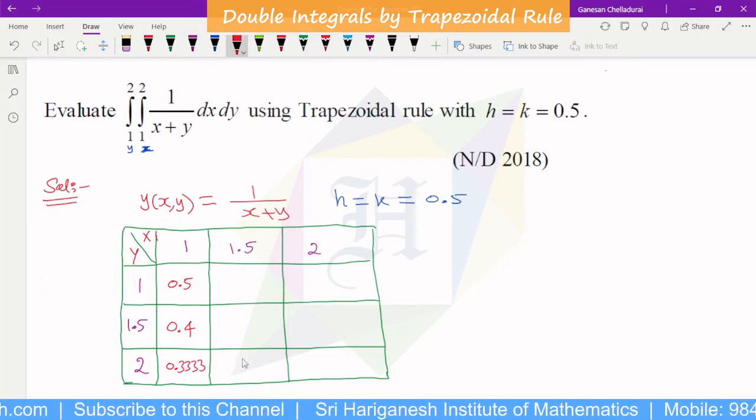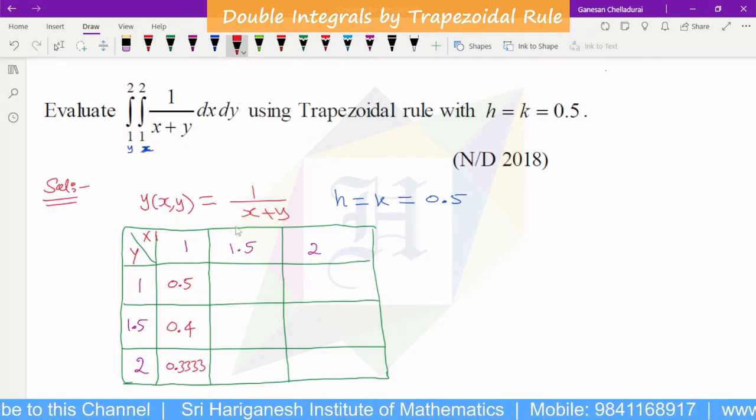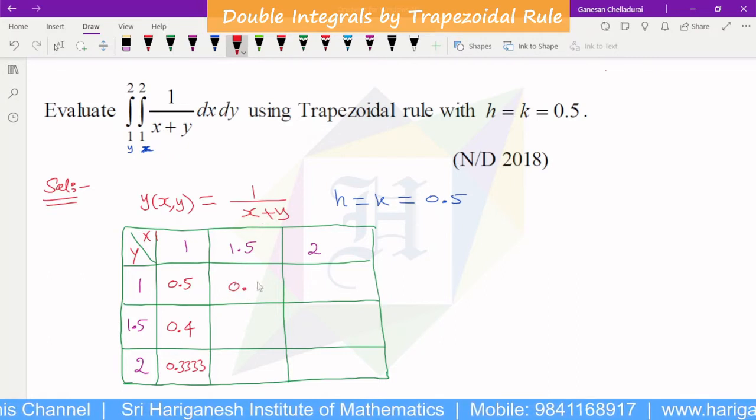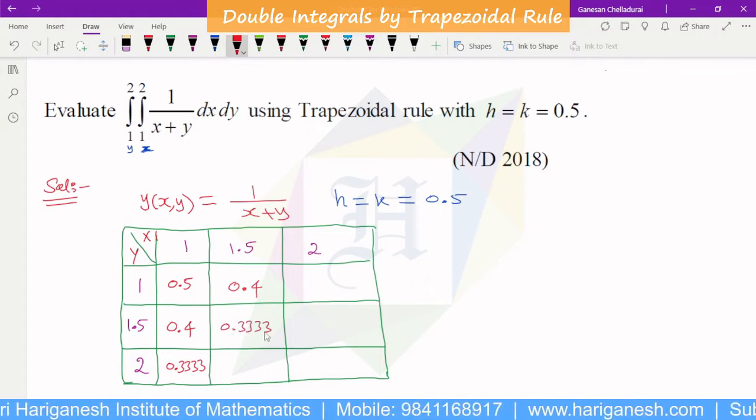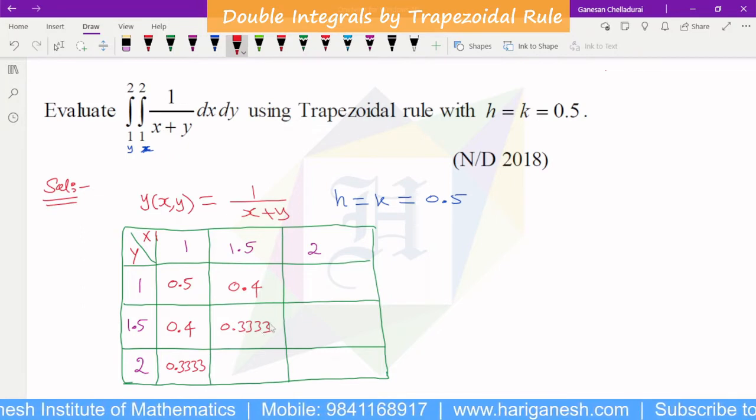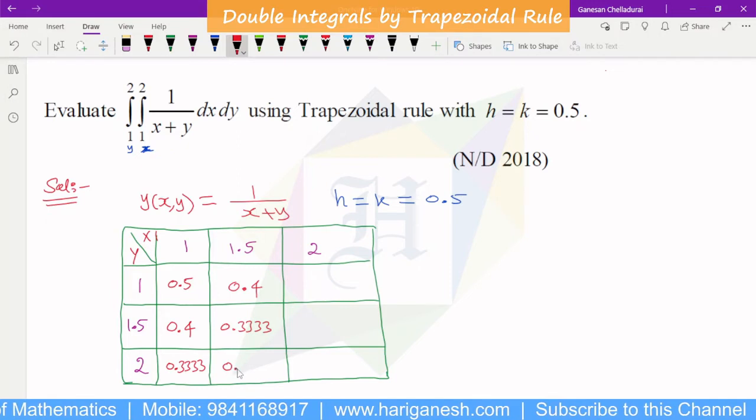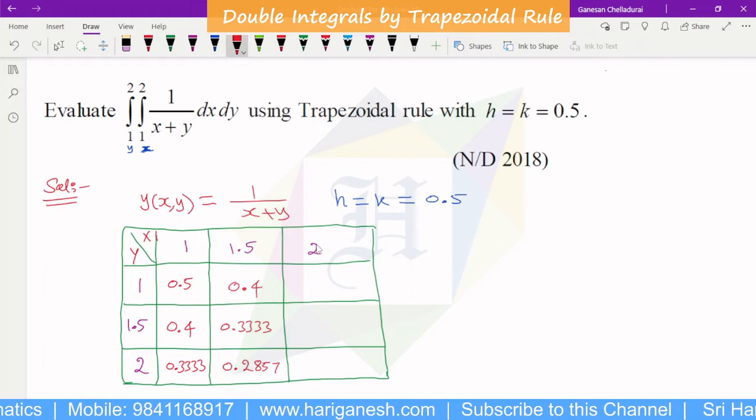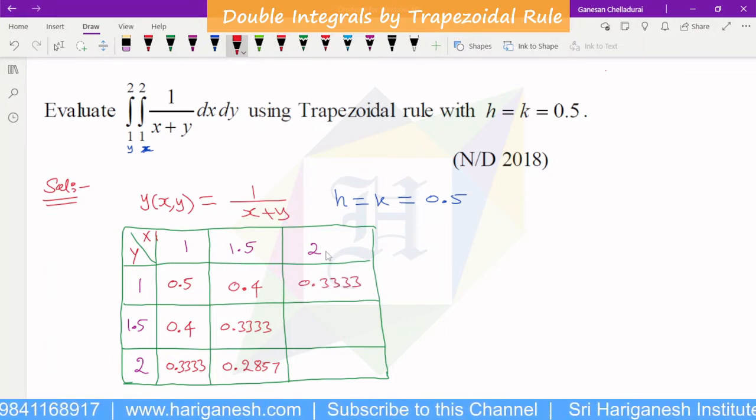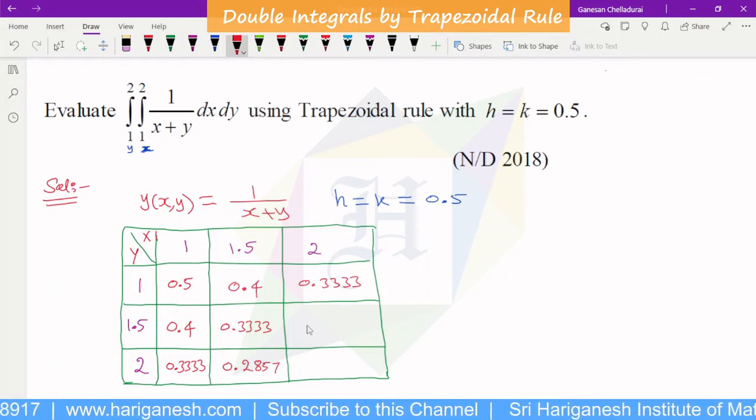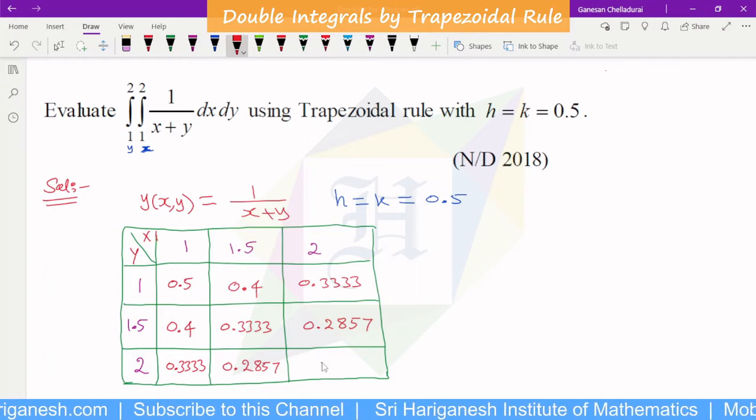3 decimal, 9 decimal. x is 1.5, y is 1, 1 by 2.5. x is 1.5, y is 1.5, 1 by 3 is equal to 0.33. x is 1.5, y is 2, is equal to 3.5, 1 by 3.5 is equal to 0.2857. 1 by 3 is equal to 0.3333, 1 by 3.5 is equal to 0.2857, 1 by 4 is equal to 0.25.